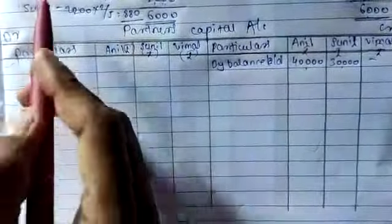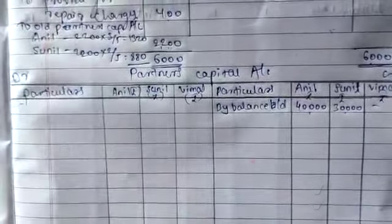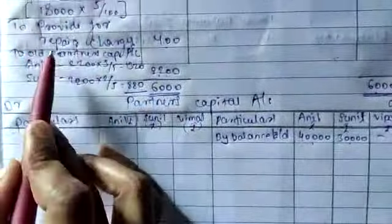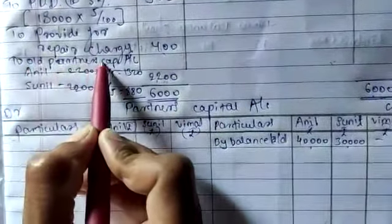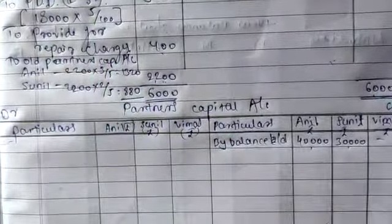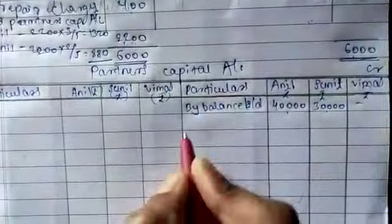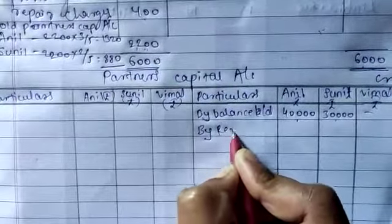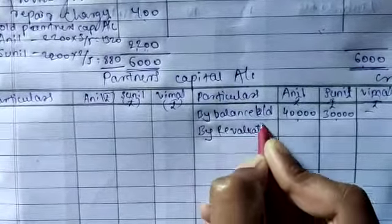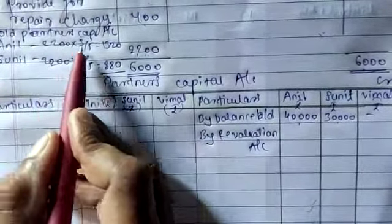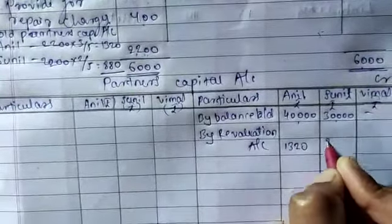Next, postings from the revaluation account go into the partners capital account. That posting should be recorded on the credit side here. So for the old partners capital account only, the revaluation profit is ₹1,320 for Anil and ₹880 for Sunil.